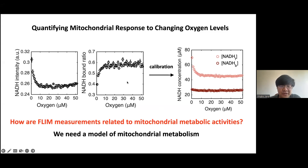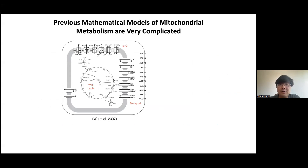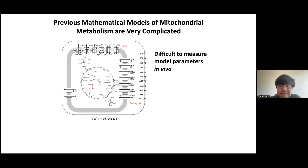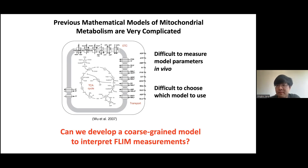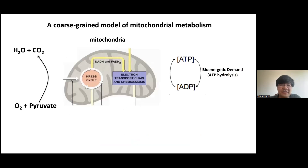The question is how these measurements — free and bound NADH — relate to the mitochondrial metabolic activities of specific pathways. To address this, we need a model of mitochondrial metabolism to interpret the results. There have been many mathematical models of mitochondrial metabolism developed, but they are generally quite complicated, established by taking into account all known metabolic pathways and the kinetics of all single enzymes inside mitochondria. It's usually difficult to measure those model parameters in vivo. The goal here is to develop a coarse-grained model to interpret these measurements, hopefully generally applicable to different systems, giving a microscopy-based technique to predict metabolic activities with optical resolution.